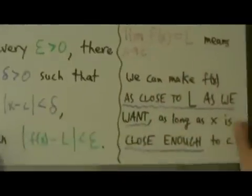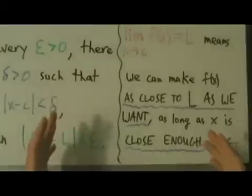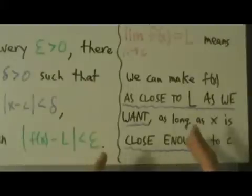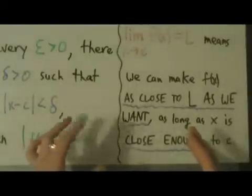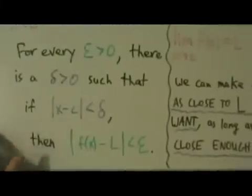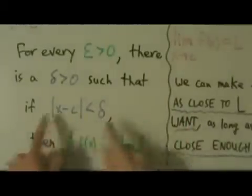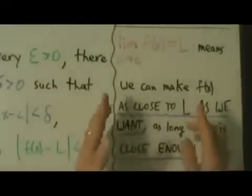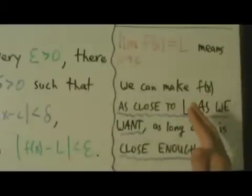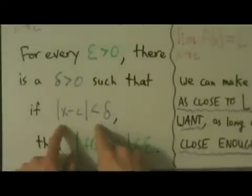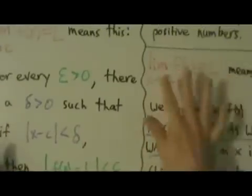So when we say this limit exists, what we mean is: if you come up to me and say, here's an epsilon, I want you to make the distance between f of x and L less than this epsilon, then I'm going to come back to you and say, I guarantee that will happen as long as you make the distance between x and c less than delta. If that works out, then this limit exists.